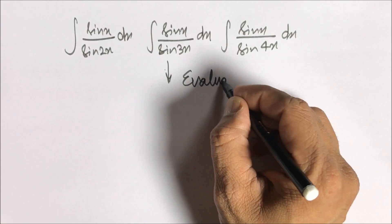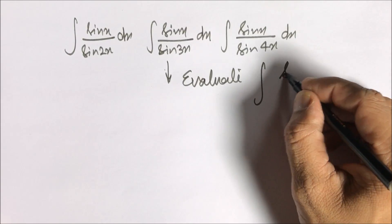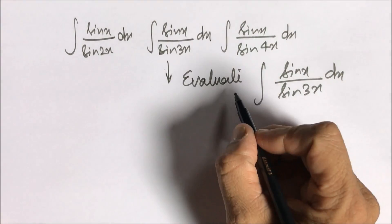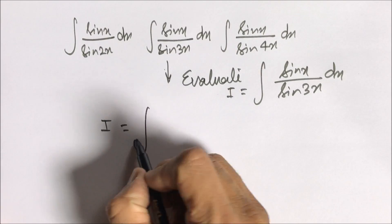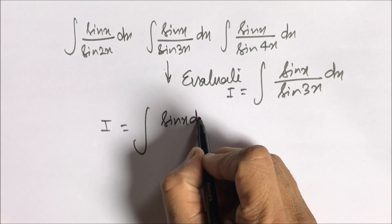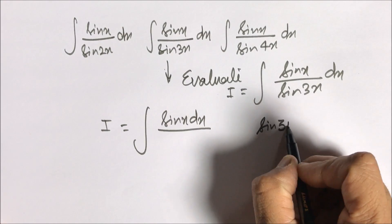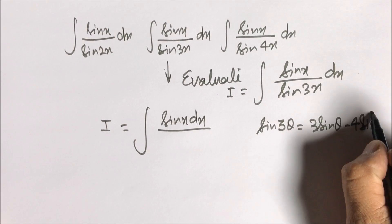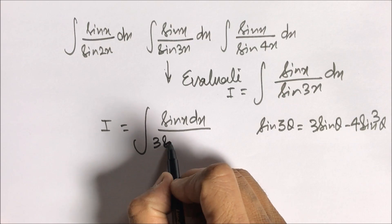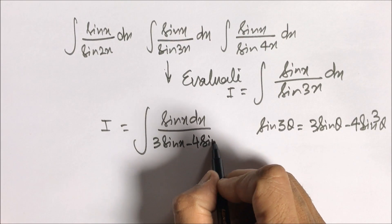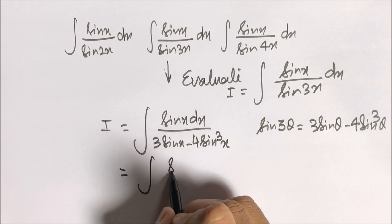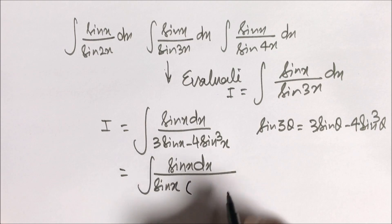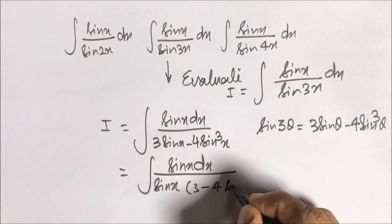The question is: evaluate the integral of sin(x) dx over sin(3x). We can open sin(3x) using the identity sin(3θ) = 3sin(θ) − 4sin³(θ), so the denominator becomes 3sin(x) − 4sin³(x). Taking sin(x) common, this becomes sin(x) times (3 − 4sin²(x)).